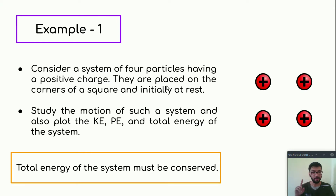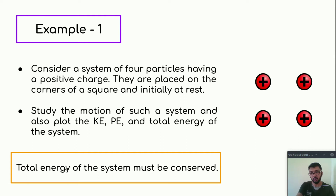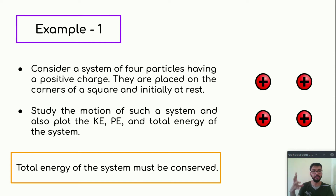Let's take our first example. Consider a system of four particles having positive charge. They are placed on the corners of a square and are initially at rest — meaning they have no initial velocity. We want to study the motion of such a system and plot the kinetic energy, potential energy, and total energy. The total energy of the system must be conserved throughout the simulation. What do you think will happen — will they stick together or fly away due to repulsive force?